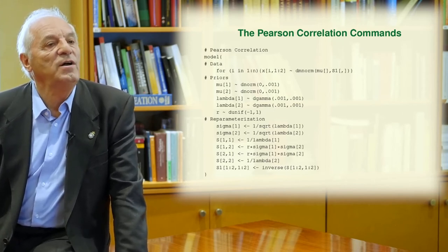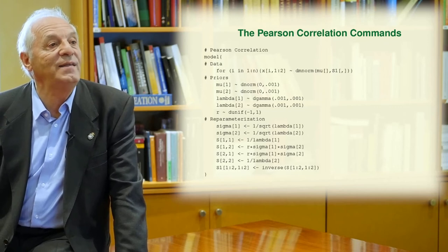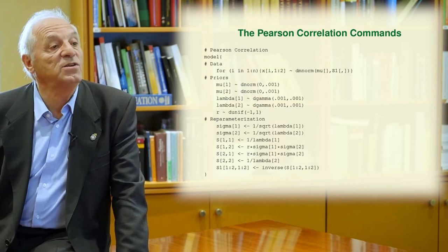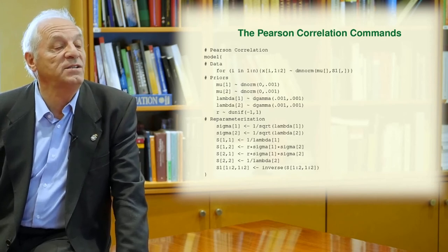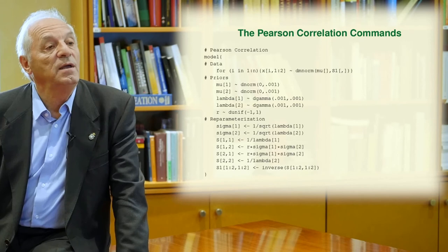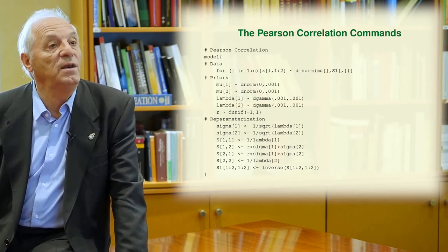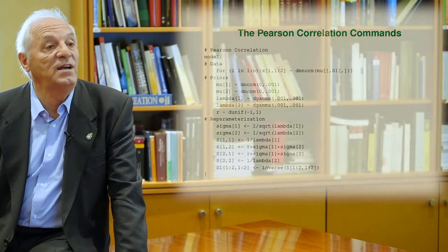And we need to define also the precision matrix s1 that we use above in the data model in terms of the variances covariance matrix. It is interesting to see that we can work with inverses in OpenBUGS, as you can see in the last command.